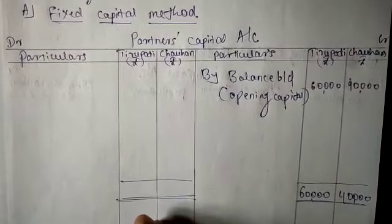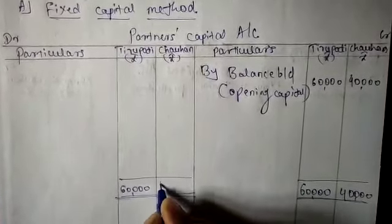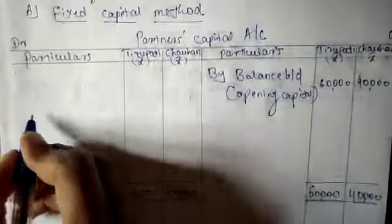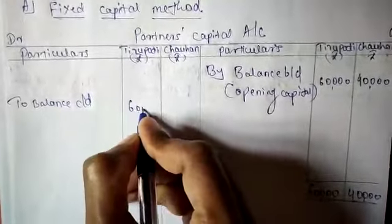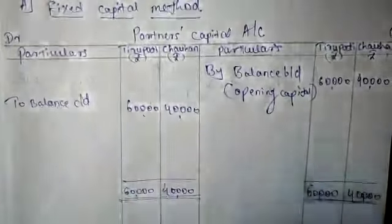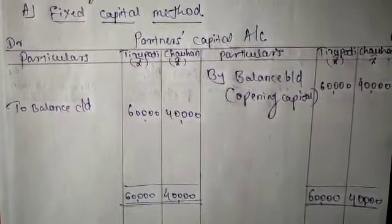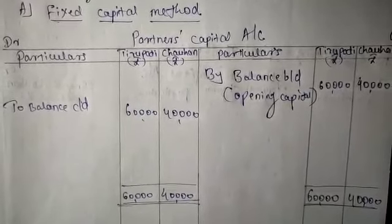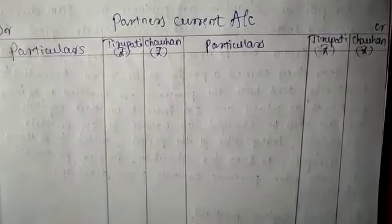The same entry is written on the debit side of the partner's capital account. The total is ₹60,000 for Tirupati and ₹40,000 for Chauhan. Since there are no other entries, the full amount is the balance carried on. This completes the partner's capital account. Under the fixed capital method, one more account is prepared for adjustments — that is called the partner's current account, which handles only adjustments, not capital entries.